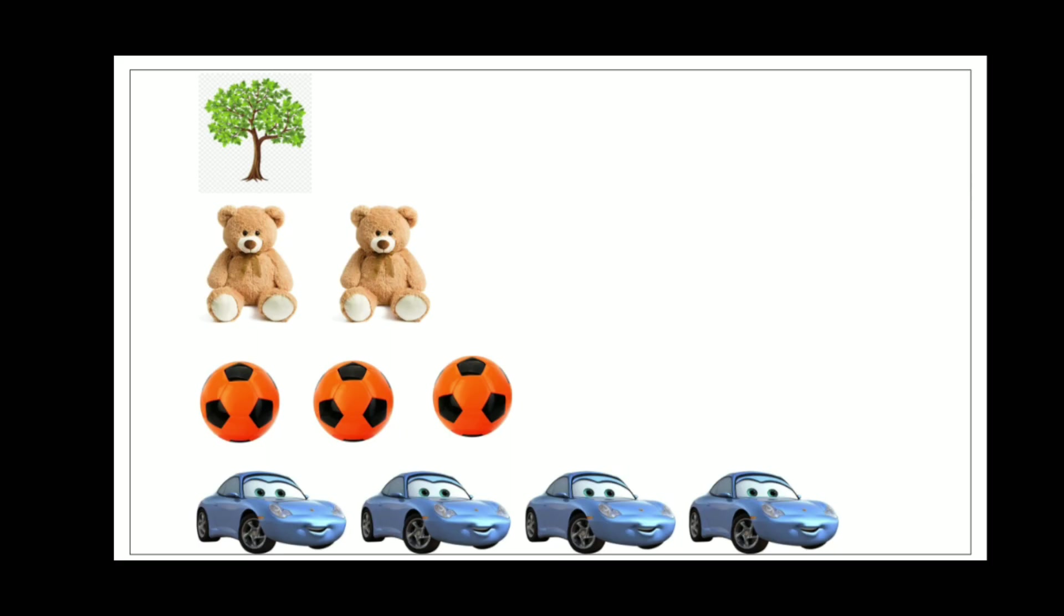Count the given objects. As you can see, there is one tree. Next there are two teddy bears: one, two. Let's count the balls: one, two, three. There are three balls. Count the cards: one, two, three, four. There are four cards.